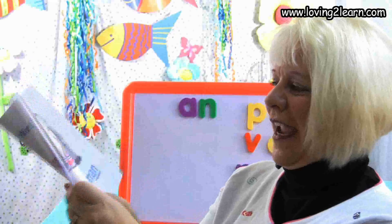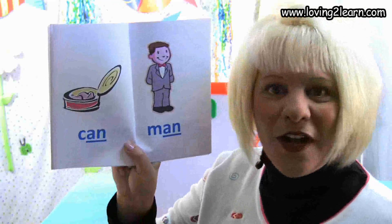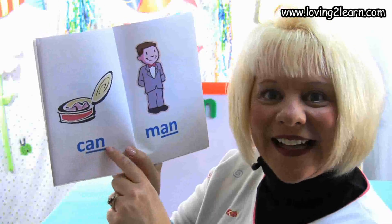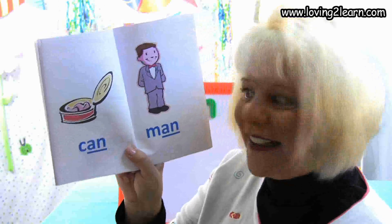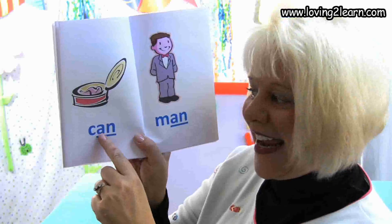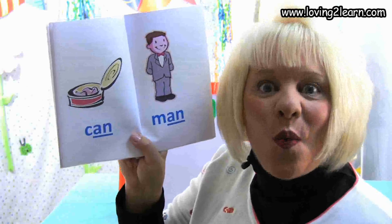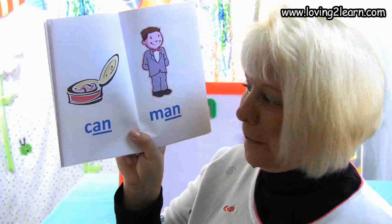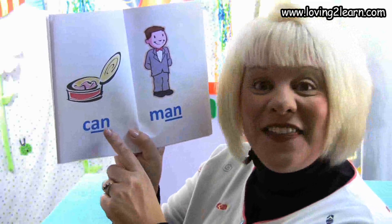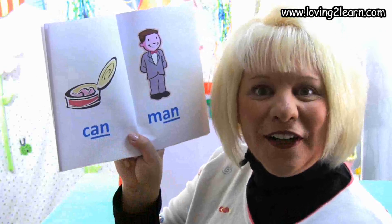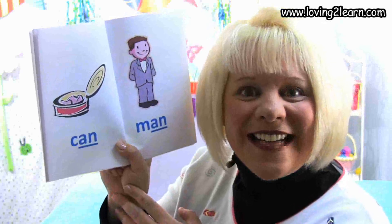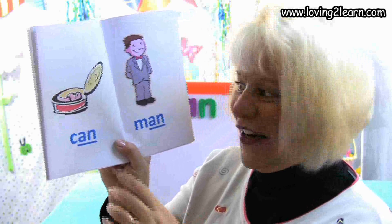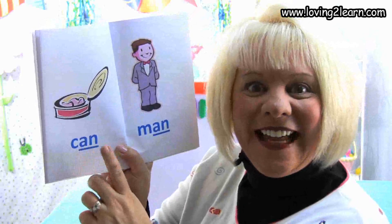We turn the page. Here we have a picture of a can. Here's the word can. Let's spell the word can: C-A-N. Where is the chunk AN in the word can? That's right, right at the end of the word. What sound does the AN chunk make? An, an, an.